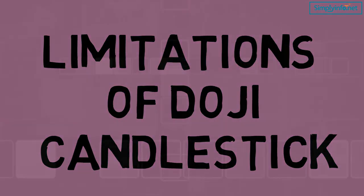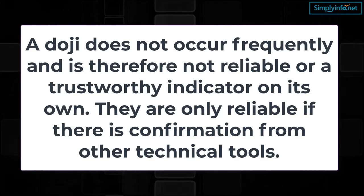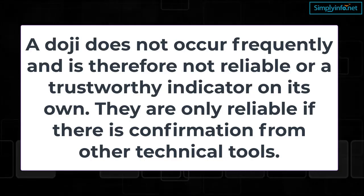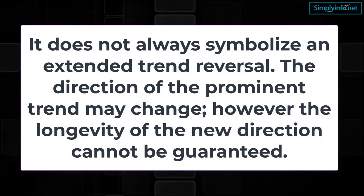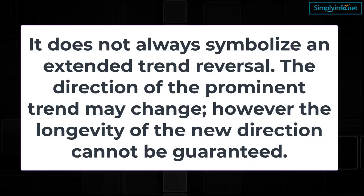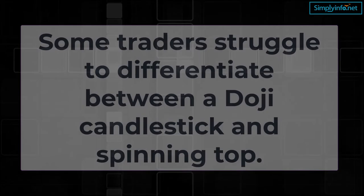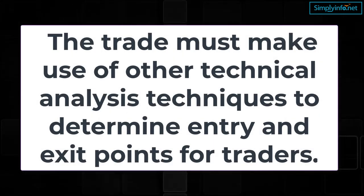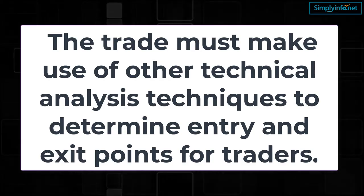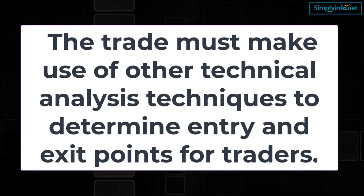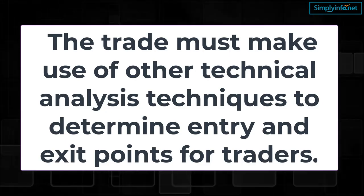What are the limitations? A doji does not occur frequently and is therefore not a reliable or trustworthy indicator on its own. They are only reliable if there is confirmation from other technical tools. It does not always symbolize an extended trend reversal — the direction of the prominent trend may change; however, the longevity of the new direction cannot be guaranteed. Some traders struggle to differentiate between a doji candlestick and a spinning top. As candlesticks do not necessarily provide price targets, using a doji to produce an informed trade will not guarantee any estimation of possible gains. The trader must make use of other technical analysis techniques to determine entry and exit points.